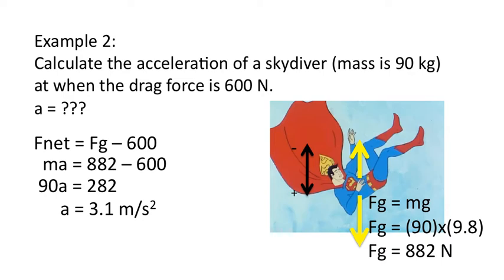Now, does that make sense? It should. When they're in free fall, they accelerate 9.8. But drag force prevents that acceleration from being 9.8. Eventually, remember, the acceleration will be equal to zero when the drag force equals exactly the force of gravity or the weight, which is 882 newtons. So at 600 newtons, it's not quite zero. It's only 3.1. The person will still be speeding up. And as they speed up, the drag force will increase.